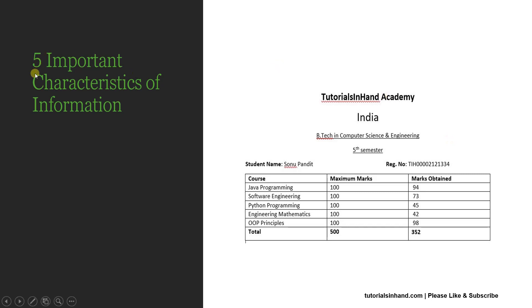Let's proceed to see what are the important characteristics of information. Even though we wanted to show only five, we will be showing some more. The first characteristic is that the structured data — that is, information — should be very accurate. Accuracy of data plays a significant role in helping in decision-making. The more accurate the information, the better the decision-making. Accuracy of information is actually the ratio of correct information to the total information gathered over a period of time.